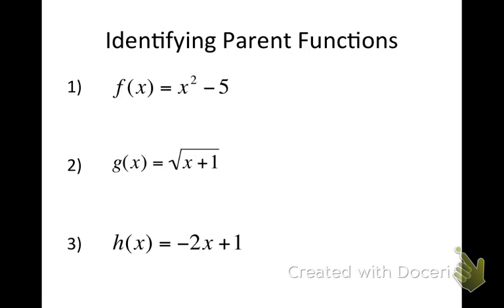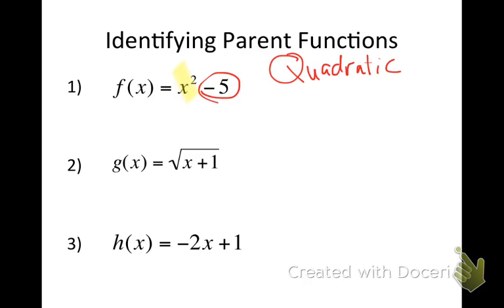Let's try number one: identifying parent functions. F(x)=x²-5. What does that x² tell me? That's a quadratic function. And what does that minus 5 tell me? It's shifted down 5. So it's a quadratic function shifted down 5.